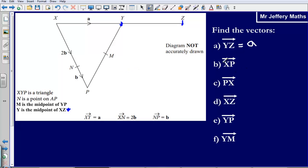Let's take a look at the next one, the vector XP. We need to figure out what that vector is equal to. Here I'm going 2b to N, then I'm going another b to get to P. So I've got 2b plus another b, so the vector XP is 3b.